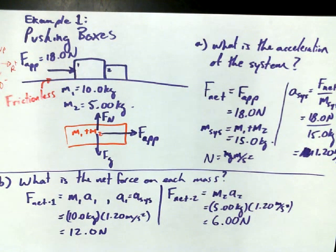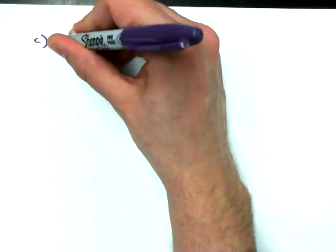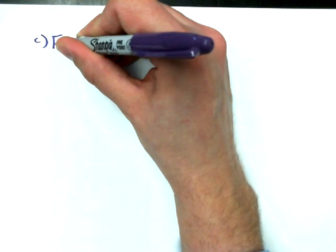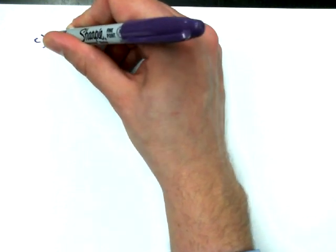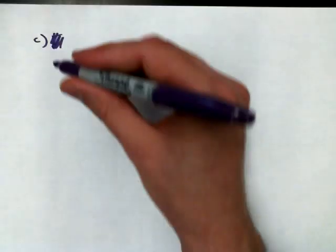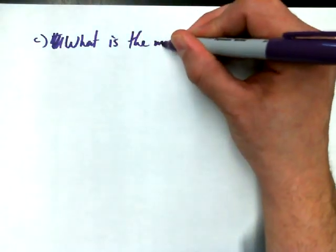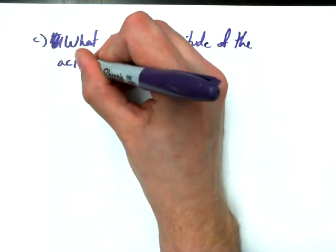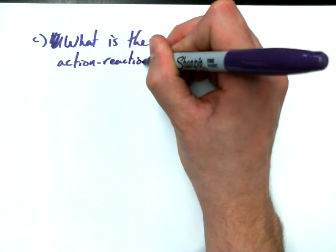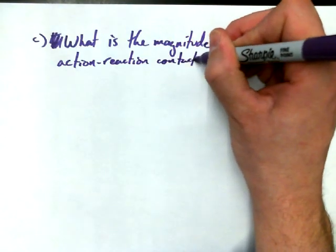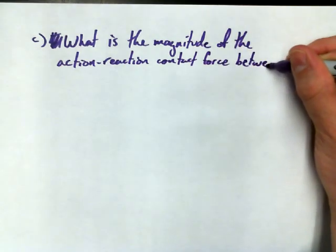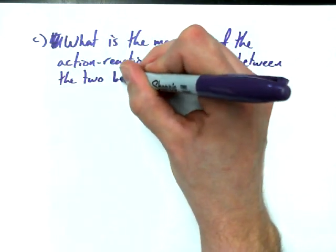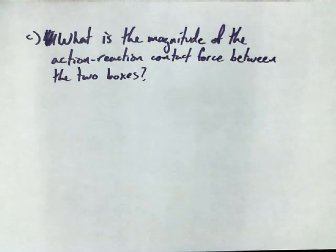I do want to follow up with a question C, though. I want to follow up with a question, what is the magnitude of the action-reaction force pair between the two boxes? What is the magnitude of the action-reaction contact force between the two boxes? Now, for that, we will likely need a free body diagram. So I want to draw both boxes again, just as FBDs.